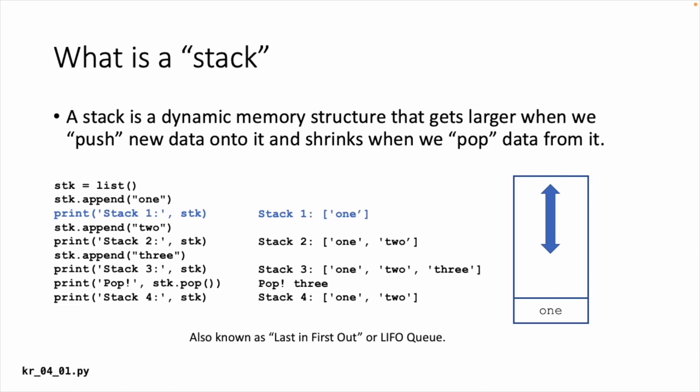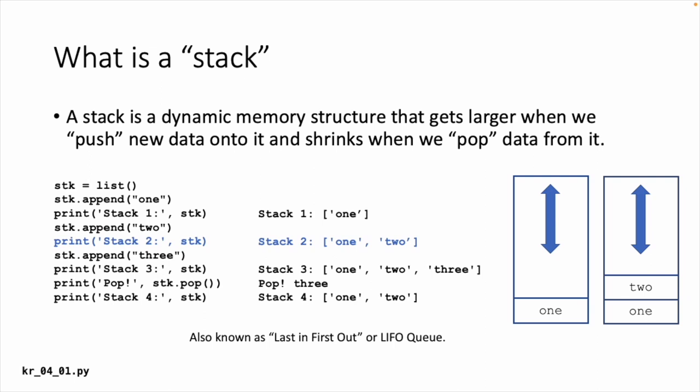We append a 2, and then our stack is 1 and 2. We append a 3, and we have 1, 2, 3 on the stack. At that point we pop. Pop says: give me the most recent pushed thing and then take it off. So we pop off 3 and the stack remains with 1 and 2. This is also known as a last in, first out or LIFO queue — the last thing in is the first thing you get out. That's a stack, and we're going to use stacks in function calls.